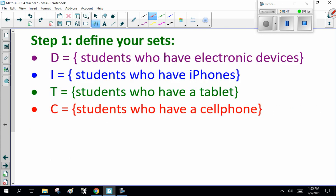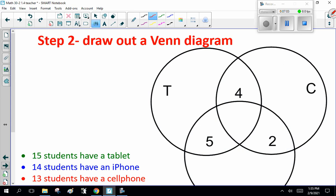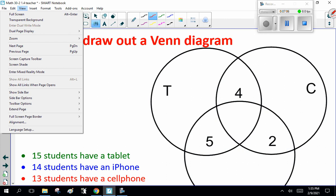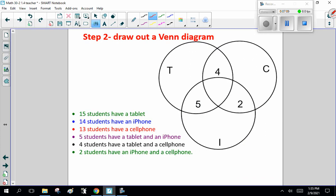First things first, define your sets. Let D be students who have electronic devices. I, students who have iPods. T, students who have a tablet. And C, students who have a cell phone. So, draw out the Venn diagram. 15 students have a tablet. 14 students have an iPhone. Fifteen students have a cell phone. Five students have a tablet and an iPhone. Four students have a tablet and a cell phone. Two students have an iPhone and a cell phone. I'm repeating myself again. Tablet is 15 and cell phone is 13. So what do we know here?